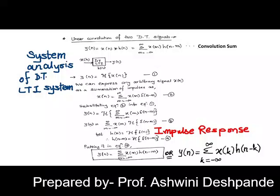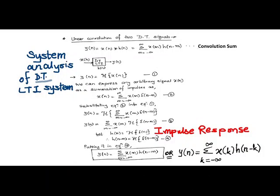Let us start the system analysis of discrete time LTI systems. For the discrete time LTI system, assuming given input x and given impulse response h, how to calculate y of n. So y, that is the output of the system or the response of the system, is computed by the formula of convolution sum.